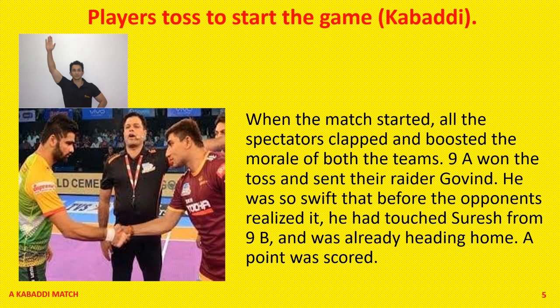Players toss to start the game of kabaddi. When the match started, all the spectators clapped and boosted the morale of both the teams. 9th A won the toss and sent their raider in. He was so swift that before the opponents realized it, he had touched Suresh from 9th B and was already heading home. A point was scored. 'Spectators' means a person who sits in the ground and watches the match and claps for the hard work of the team. 'Swift' means very quickly. For example: A swift clap of thunder woke me up.